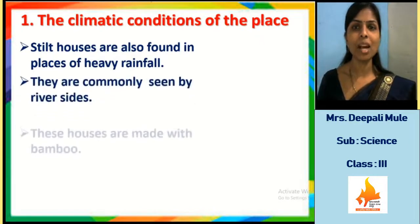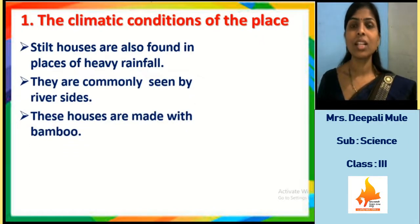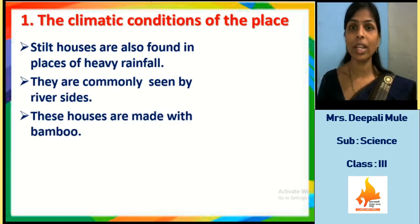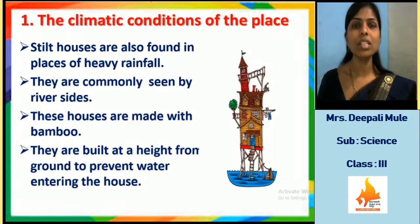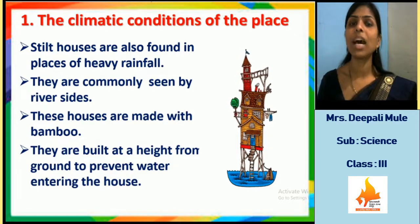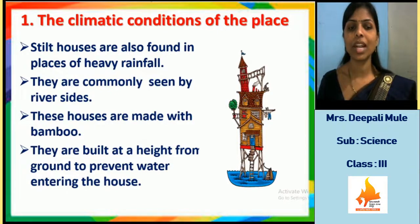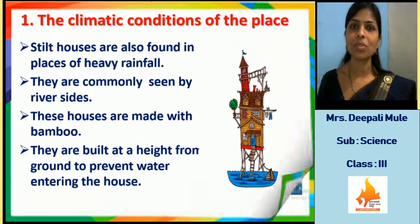As a second example, people make stilt houses. Stilt houses are found in riverside or lakeside areas. These houses are made with bamboo and are built at a height from the ground to prevent water from entering the house.